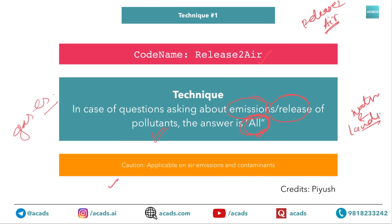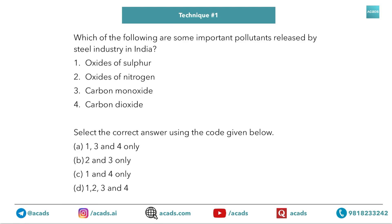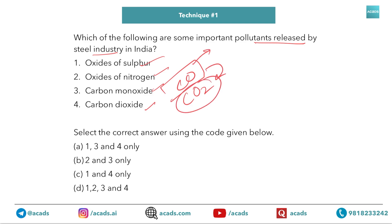Now let's see the application of technique no. 1. The question is: which of the following are important pollutants released by the steel industry in India? Options include oxides of sulfur, nitrogen monoxide, dioxide, carbon monoxide, CO2. One method is to start analyzing — will nitrogen emit, will CO remain or oxidize to CO2? Ultimately, please do not overthink such questions. This happened in 2019 — a lot of candidates got this question wrong due to overthinking. So mark D in such questions.